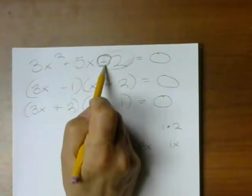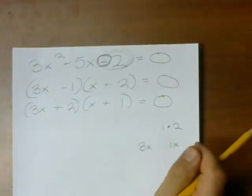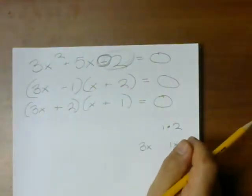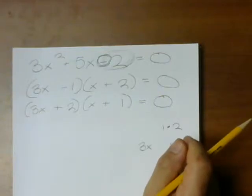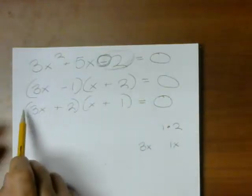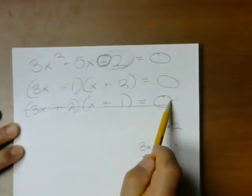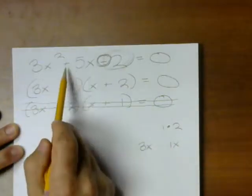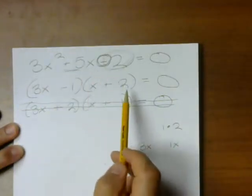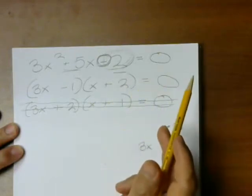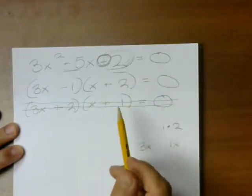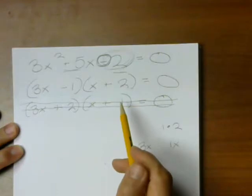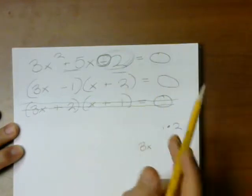We can't forget that we need to actually get a negative 2 at the end. And only one of these is going to actually give me a negative 2. And it is not this one. So even though we were able to make the middle term work, using numbers with a product of 2,